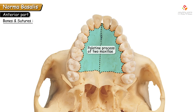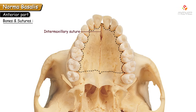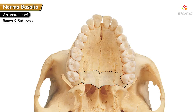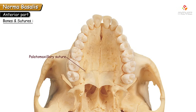The anterior two-thirds of the hard palate is formed by the palatine process of the maxillae. The right and left maxillae project, forming a palatine process which meets at the intermaxillary suture. The posterior one-third of the hard palate is formed by the horizontal plates of the palatine bone, which meet in the midline at the inter-palatine suture.